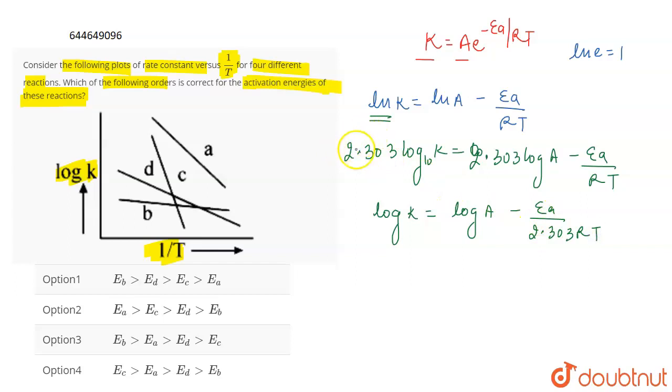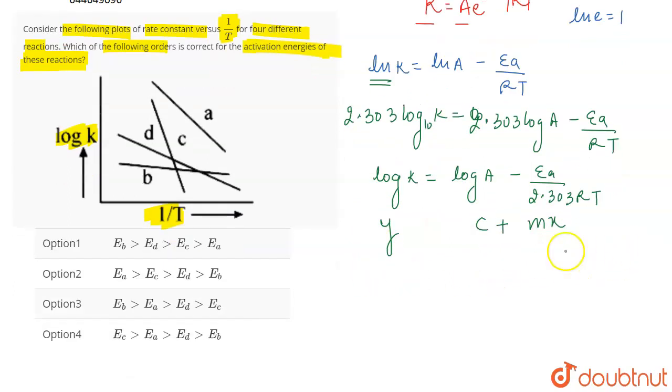If we take 2.303 common, this is the equation that we are going to get. Now, from here, if you compare this to Y equals MX plus C, this is the equation of a straight line and the curve is plotted between Y, which is log K, and X, which is 1 by T.